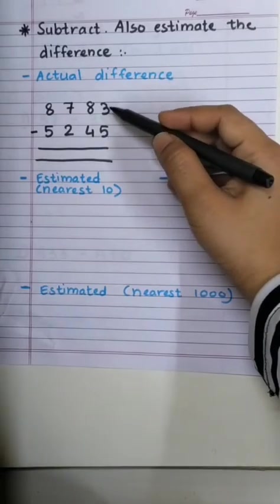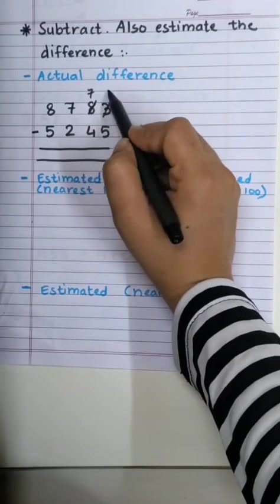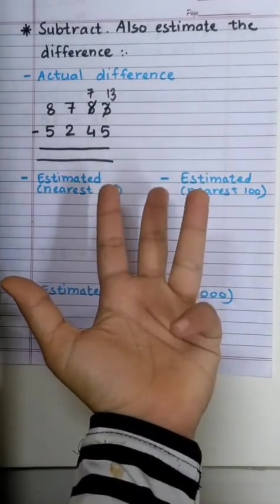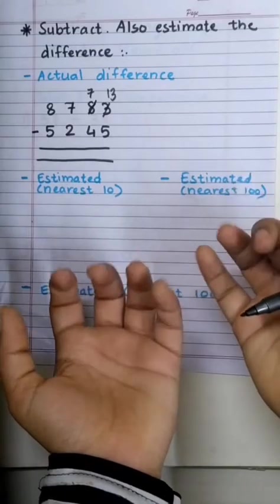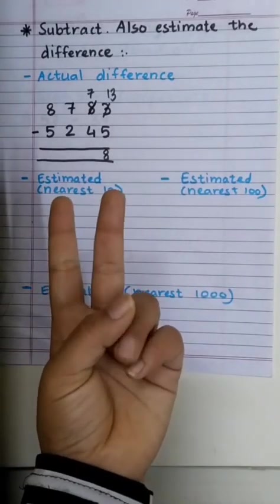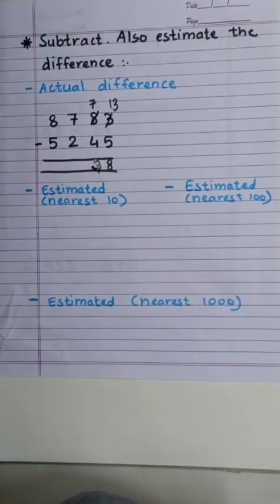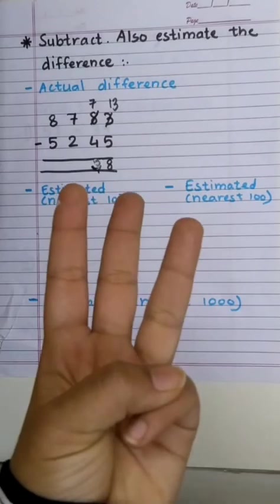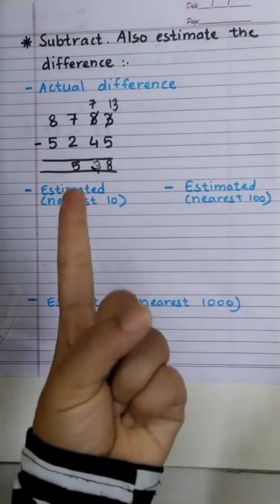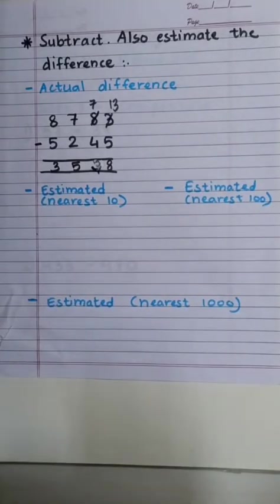3 minus 5. Not possible. This is a smaller digit. So, it will seek help from 8. Now, 13 minus 5. After 5: 6, 7, 8, 9, 10, 11, 12, 13. How many? 8. 7 minus 4. After 4: 5, 6, 7. Now, 7 minus 2. After 2: 3, 4, 5, 6, 7. How many? 5. And 8 minus 5. After 5: 6, 7, 8. 3 again. So, the actual difference is 3,538.